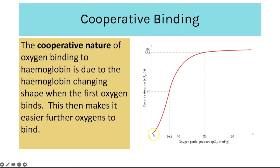This links to the concept of cooperative binding. The cooperative nature of oxygen binding to haemoglobin is due to haemoglobin changing shape. When the first oxygen binds it causes the shape of the haemoglobin to change, exposing further binding sites and making it easier for the second and third oxygens to bind — which is why the curve is much steeper at that point. It then levels off because only one of the four binding sites remains, reducing the likelihood of binding.